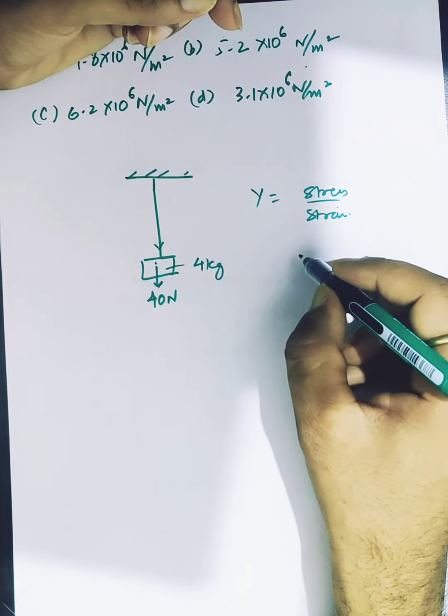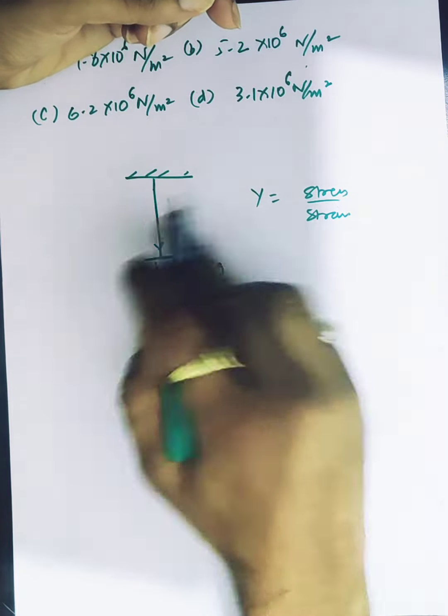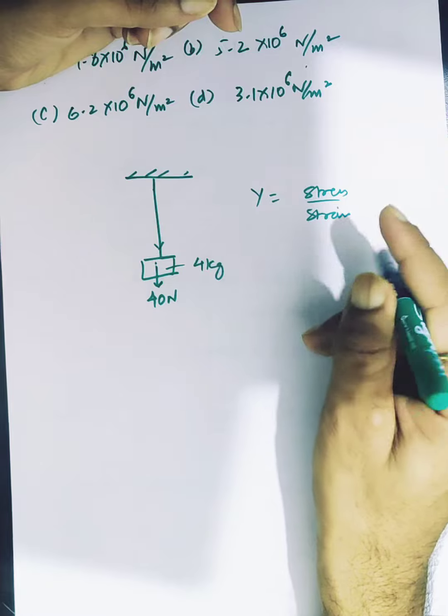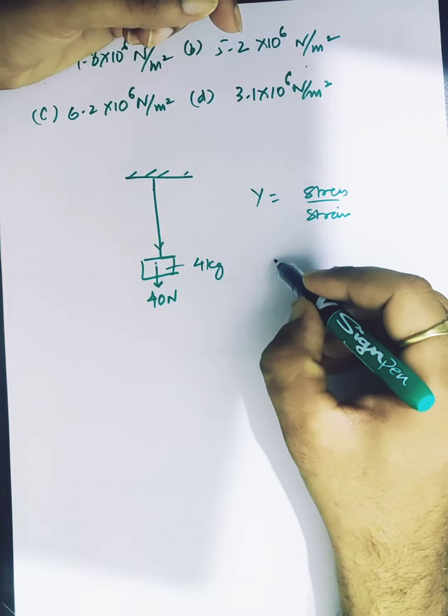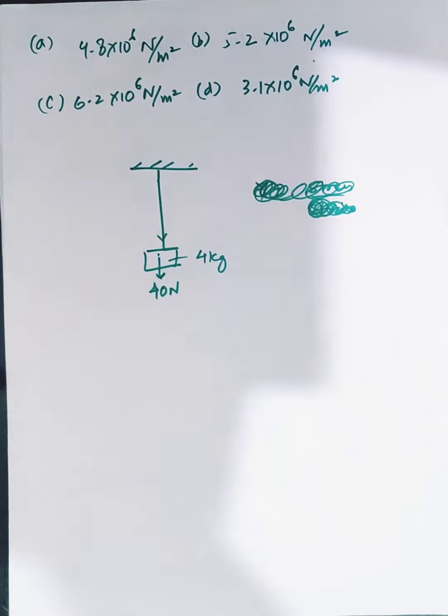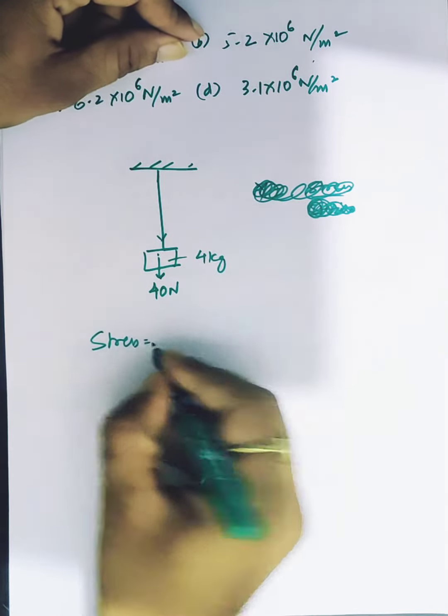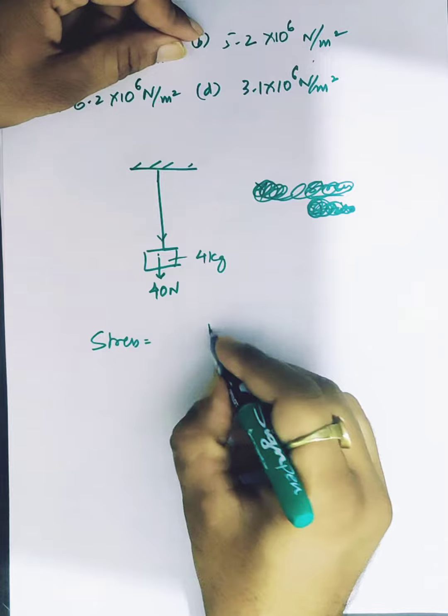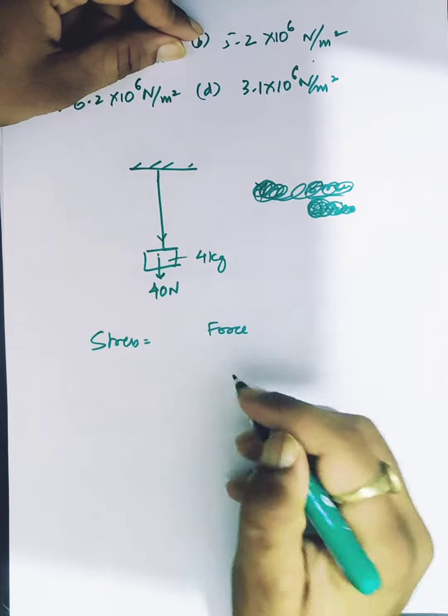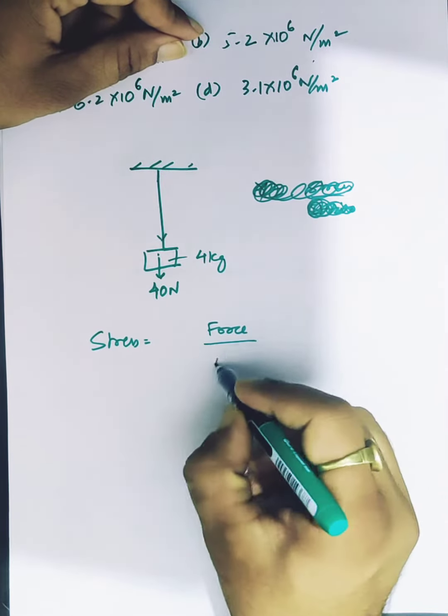So we have to get stress. We can get stress from the internal force developed. In equilibrium condition, external force equals internal force. Stress is force upon area.